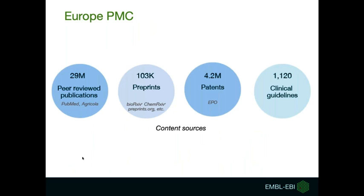Europe PMC has content from different sources. The content can be split into peer-reviewed publications and preprints, which are full text publications prior to journal peer review. Preprints in Europe PMC are from different servers like bioRxiv, ChemRxiv, medRxiv, Preprints.org, and others. There are also other sources like patents from the European Patent Office, clinical guidelines, books, PhD theses, and so on.